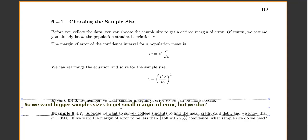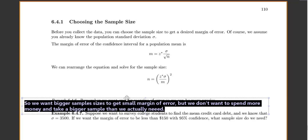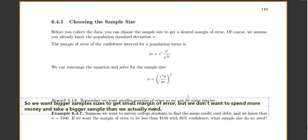But we don't want to spend more money and take a bigger sample than we need. We'll often say, how small of a margin of error do we need? We'll say we need to have a certain precision and then we'll figure out, for this precision that I want, how big of a sample size do I need? And then we'll only sample that much because if we do more than that, we're really just wasting money.